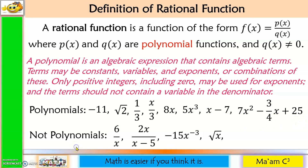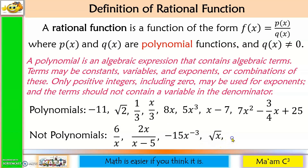Here are examples of expressions that are not polynomials. 6/x and 2x/(x−5) are both not polynomials because they have a variable in the denominator — the terms should not contain a variable in the denominator. Negative 15x raised to negative 3 is not a polynomial because the variable is raised to a negative integer — only positive integers, including 0, may be used for exponents. And the square root of x is equivalent to x raised to the 1/2, and 1/2 is not an integer. So these are not polynomials.